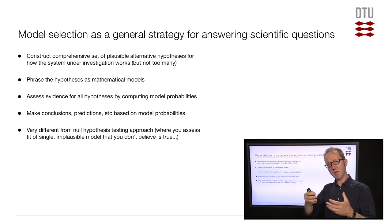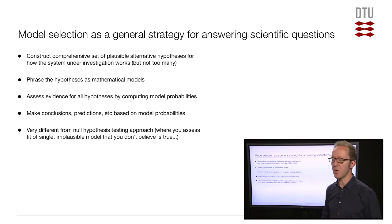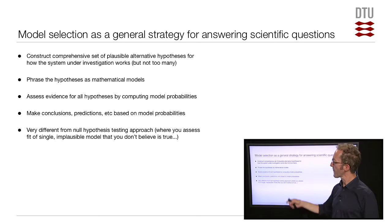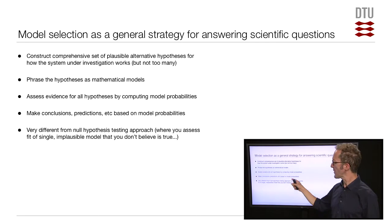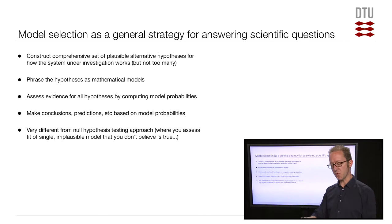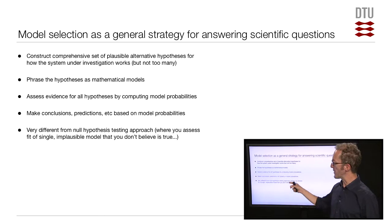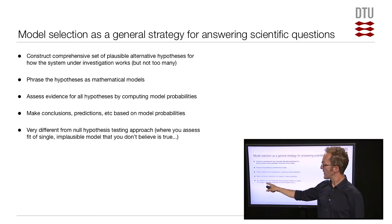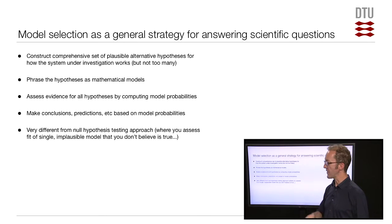The idea is that you start by constructing a comprehensive set of plausible alternative models or hypotheses about how the system works — not too many, just based on your scientific knowledge. Each model must be phrased as a mathematical model. You then assess evidence for all hypotheses by computing model probabilities using the AIC method, and make conclusions — for example, identifying the best model or noting that all the best models share a parameter for gamma-distributed rates. This is quite different from null hypothesis testing, where you typically assess only a single implausible null model.